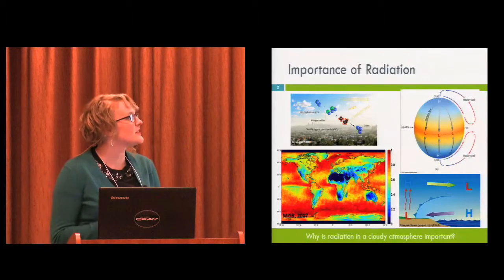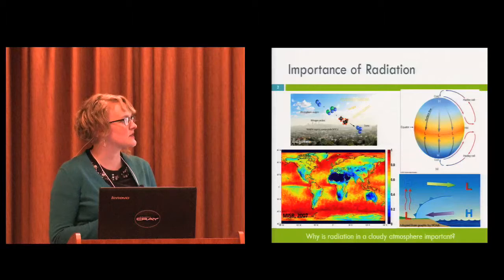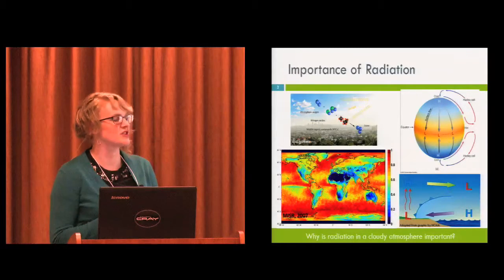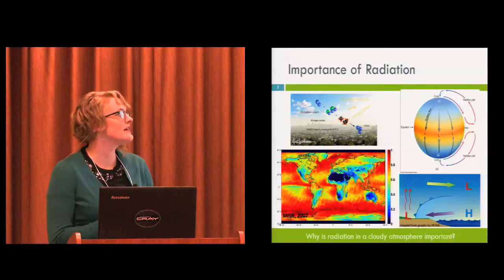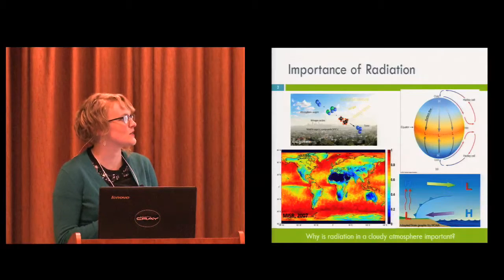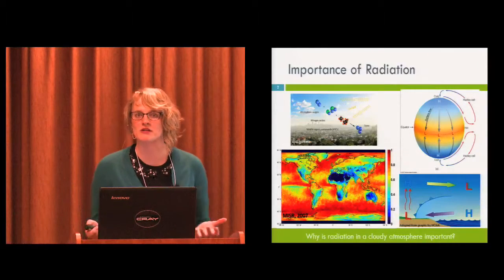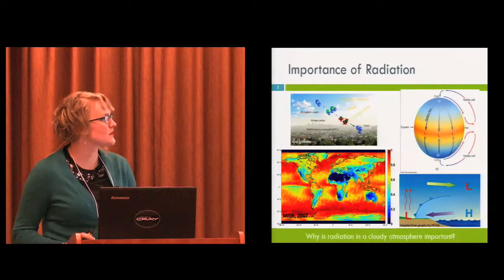For example, just the fact that we have sunlight coming in on a spherical planet, we get more radiation absorbed at the equator than the poles, and that sets up our Hadley cell circulation, which is a first-order approximation of global circulations on Earth.